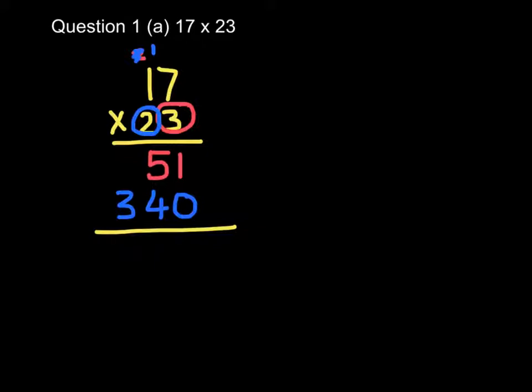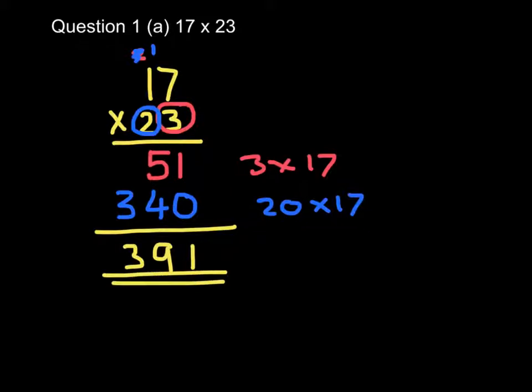So here I've got 3 times 17, and here I've got 20 times 17. So if I add both of those together, I will get the answer for 23 times 17. So 1 add 0 is 1, 5 add 4 is 9, and 3. So my final answer is 391, which means that 17 times 23 equals 391.